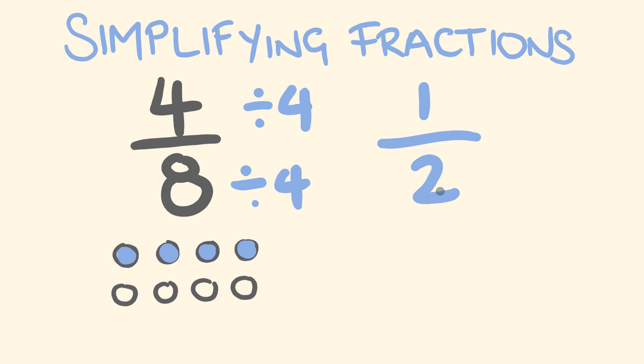and 8 divided by 4, we get 2. So an equivalent fraction to 4 over 8 is 1 half. And they mean exactly the same thing. As you can see here, in terms of these dots here, half of them are shaded in, but we've made the numbers a lot more simple. And that's all that's meant by simplification.